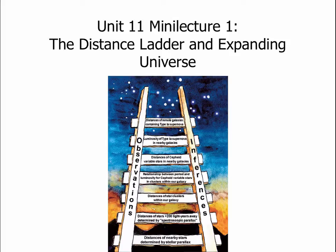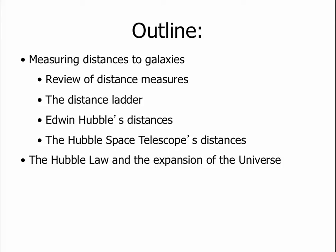This material is covered in chapter 24 sections 2 and 3, and in chapter 26 section 2. Our outline for this mini lecture is to talk about how we measure distances to galaxies. We've already talked about a few pieces of this ladder — how we get distances to nearby stars and to star clusters — and then we'll flesh it out into a full-blown distance ladder. Then we'll talk about Edwin Hubble and his discoveries, how that work has been carried on with the Hubble Space Telescope, and build that into an understanding of the expansion of the universe.